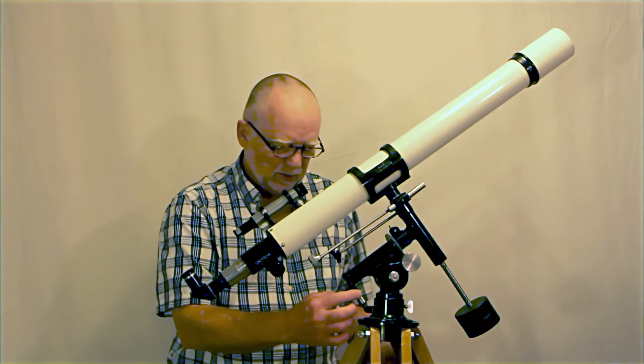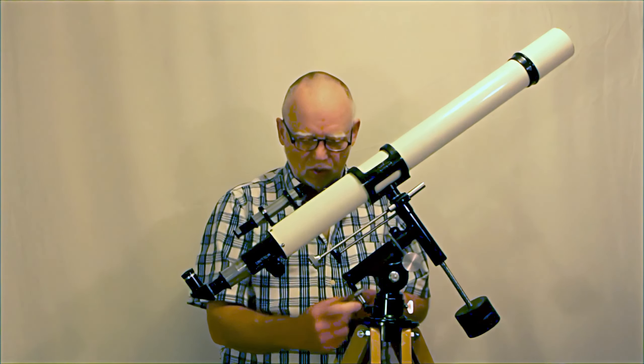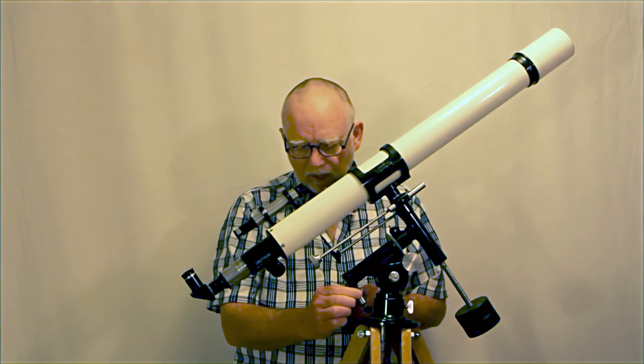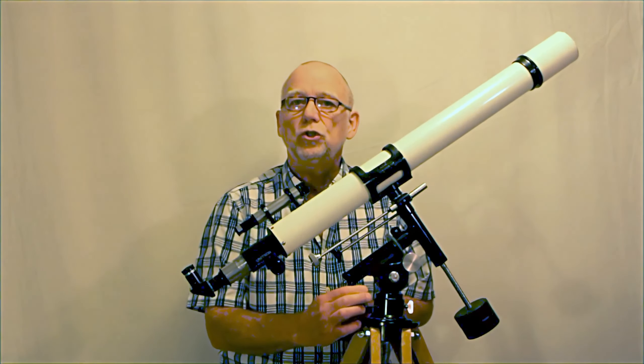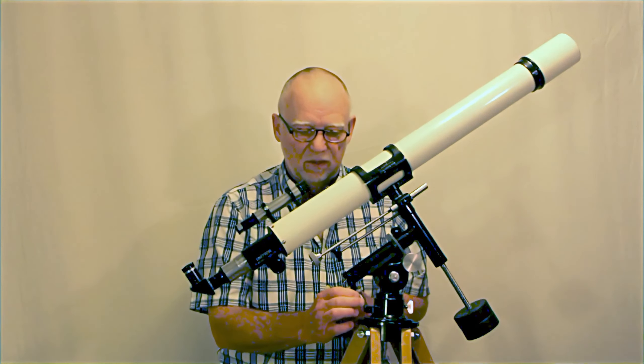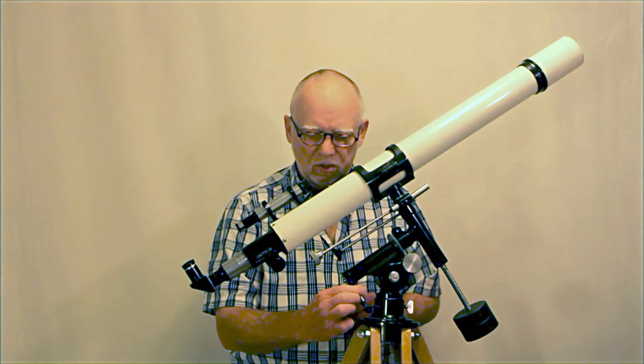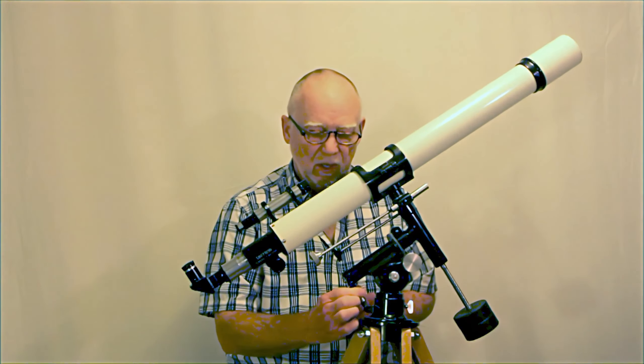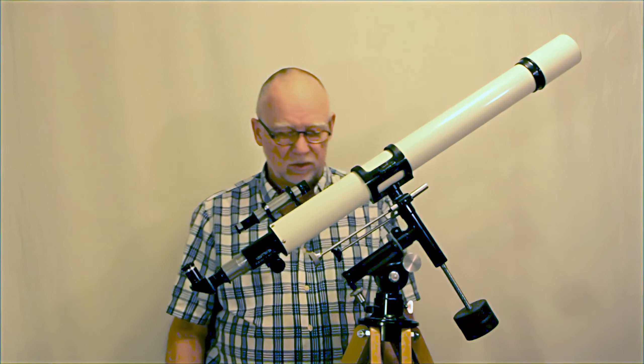Another thing that dates this scope is this. This is called the Latitude Adjuster. The Latitude Adjuster on this scope, you can see, is quite a bit bigger. It's more functional than a lot of the, actually the newer ones. You can actually turn this and adjust it pretty successfully. On later models they replaced this with a simple nut that was a bit more difficult.